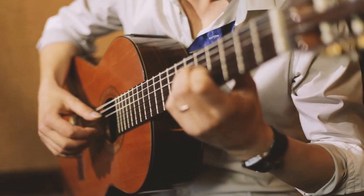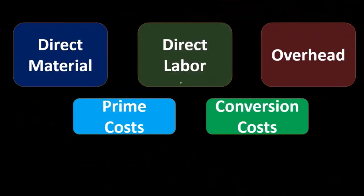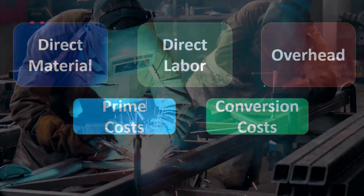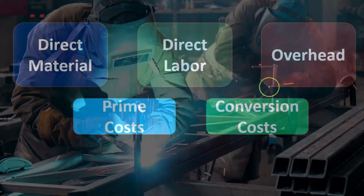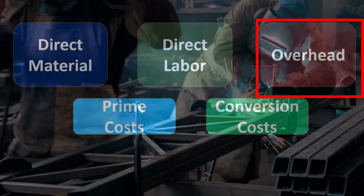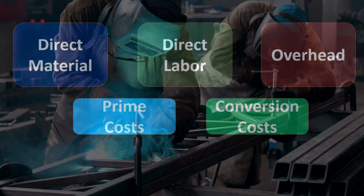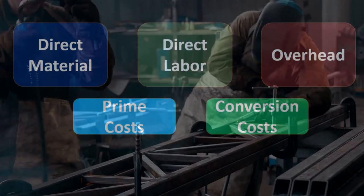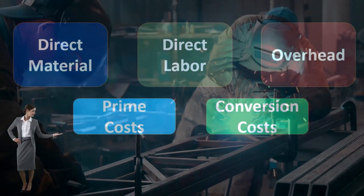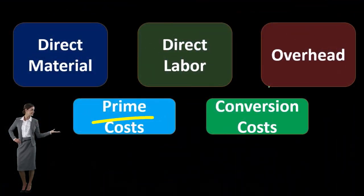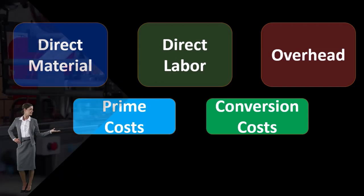Conversion costs include direct labor and overhead, because direct labor is part of processing the raw material, and overhead includes anything in the factory that we need in order to convert. So things like depreciation on the factory, the supervisor's salary, small tools, and glue — all that stuff is part of the conversion process, the things we're adding to that piece of wood in order to convert it from just a piece of wood to the finished product, the guitar.